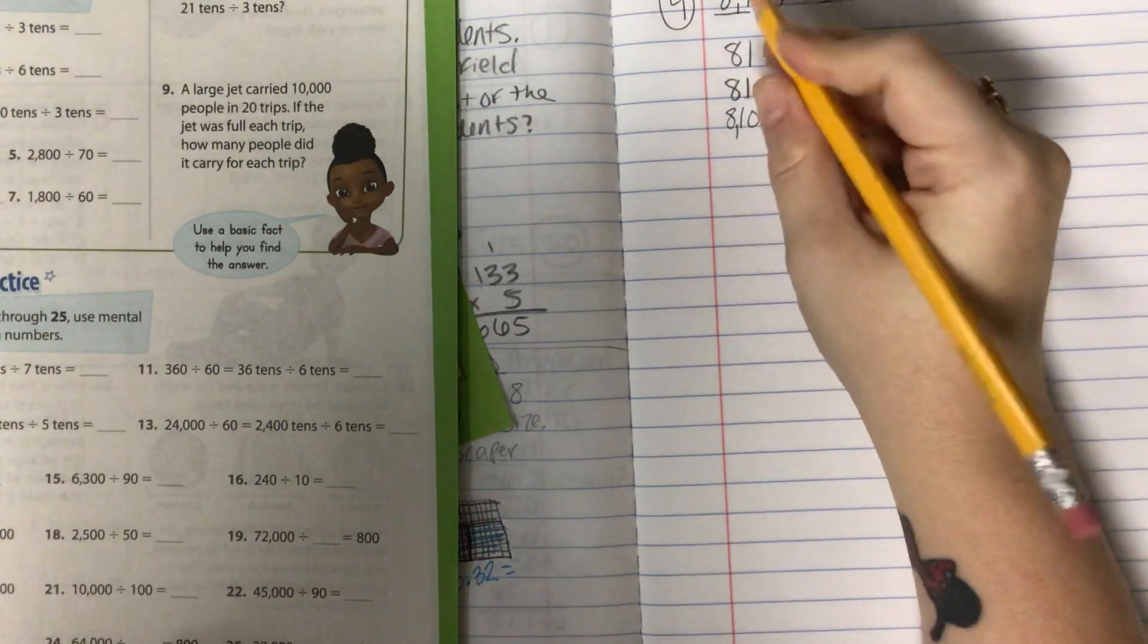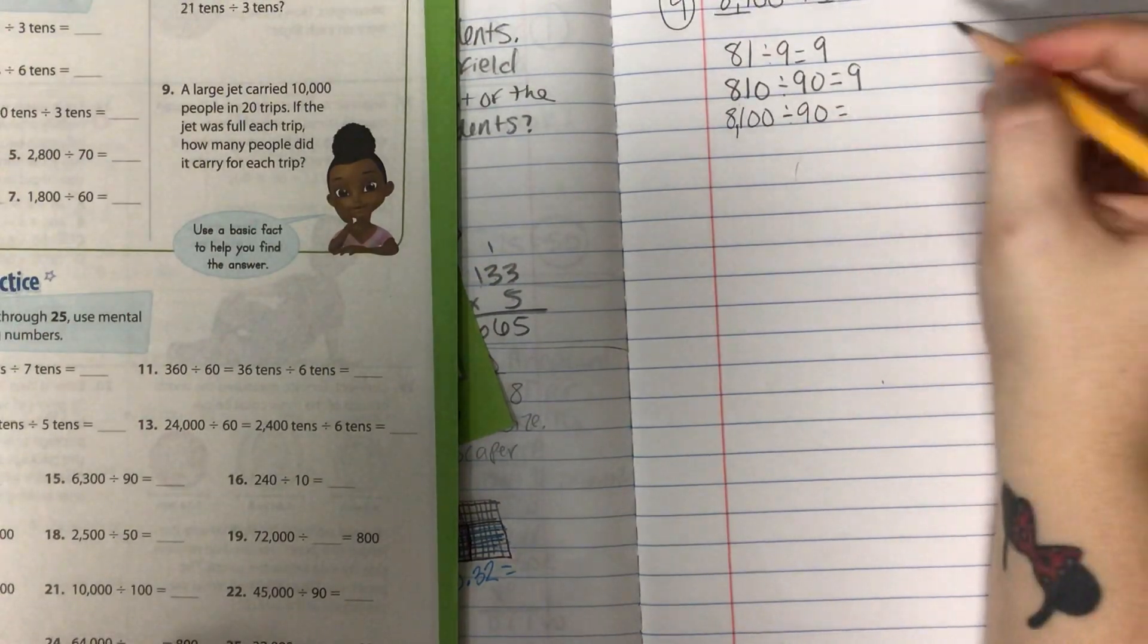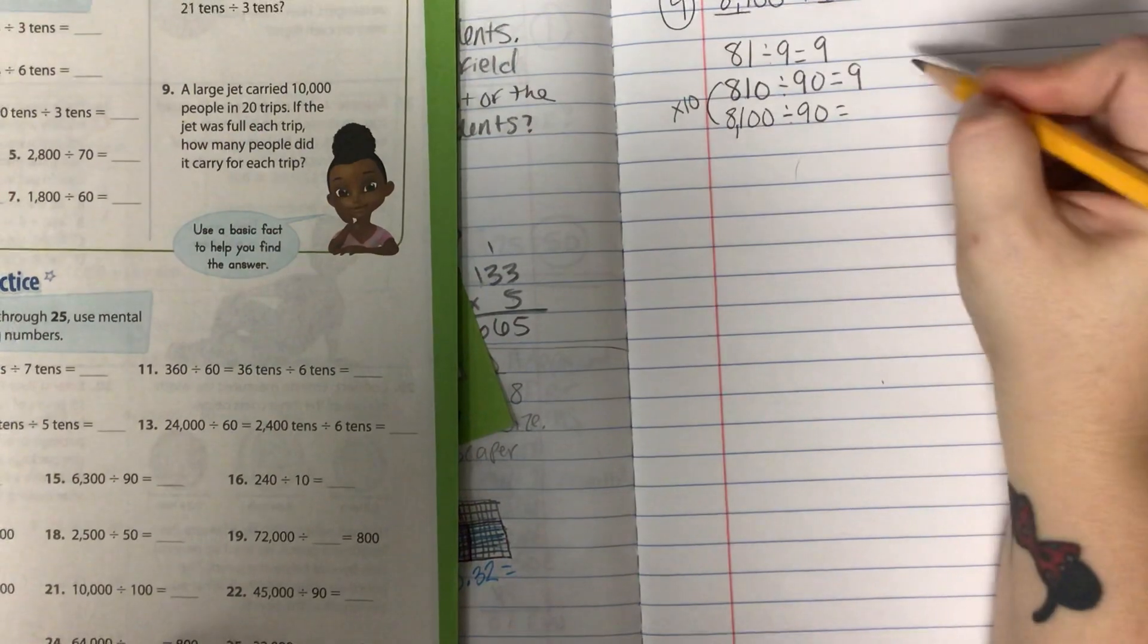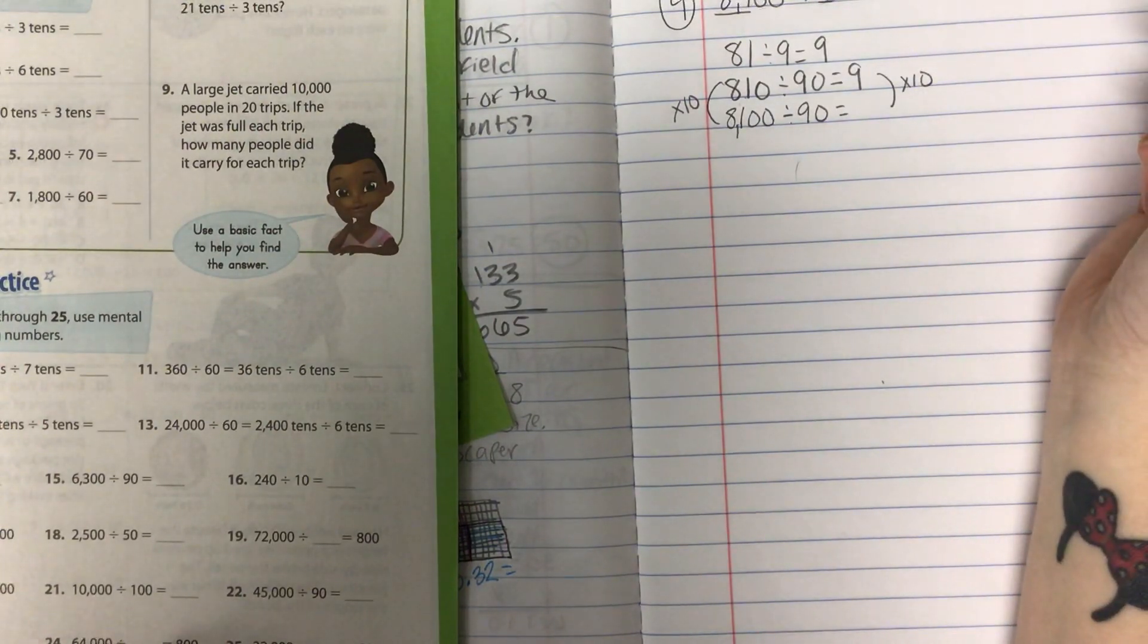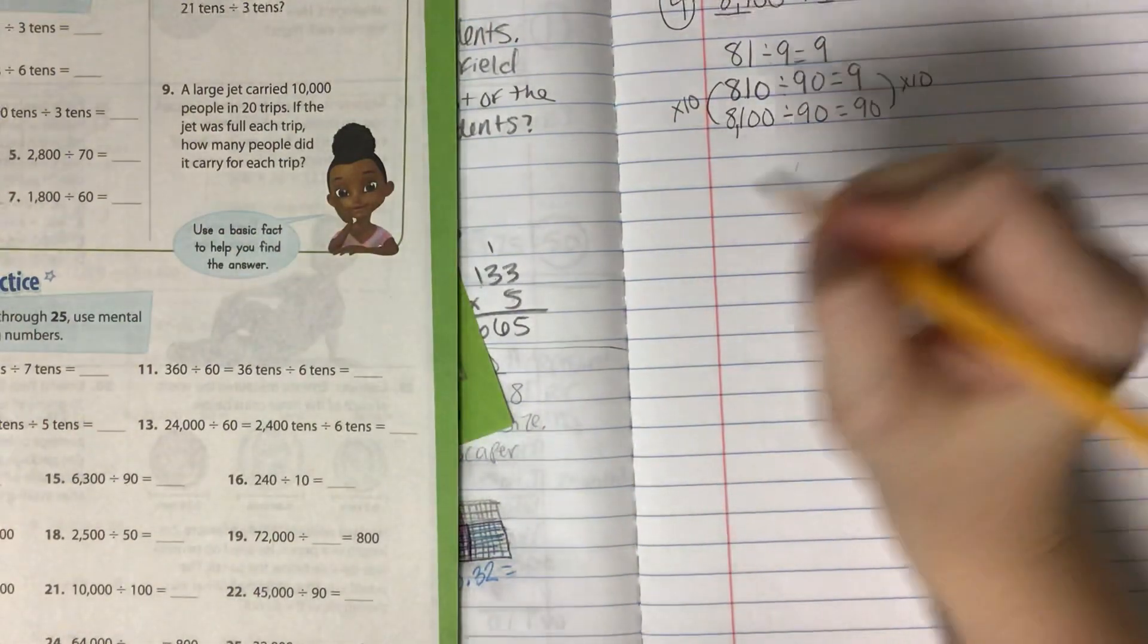Oh, look, there's my answer right there. I'm going to keep my 90 the same. And if I got 10 times bigger here, I need to get 10 times bigger here. And that's going to give me 90 as my answer.